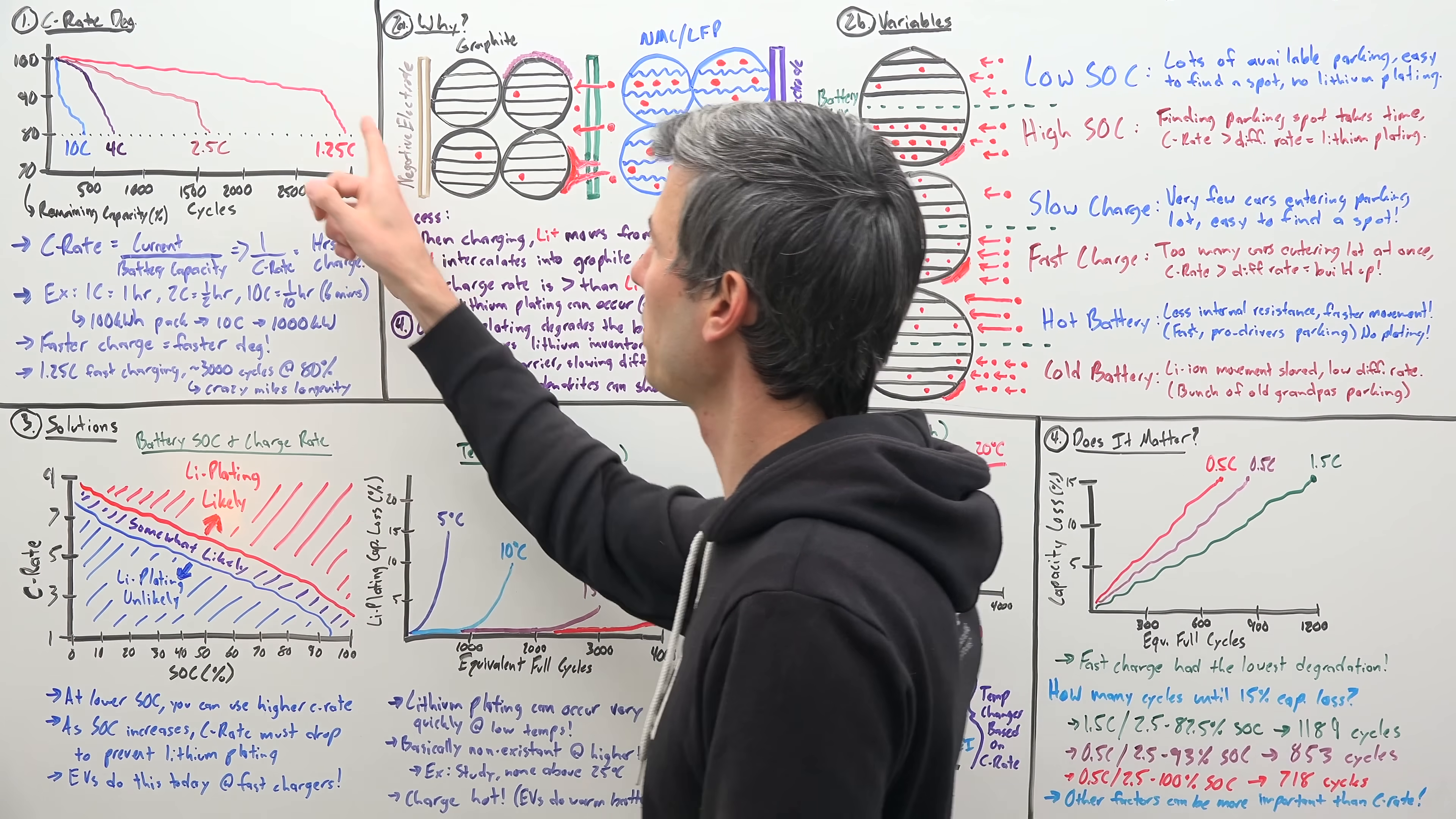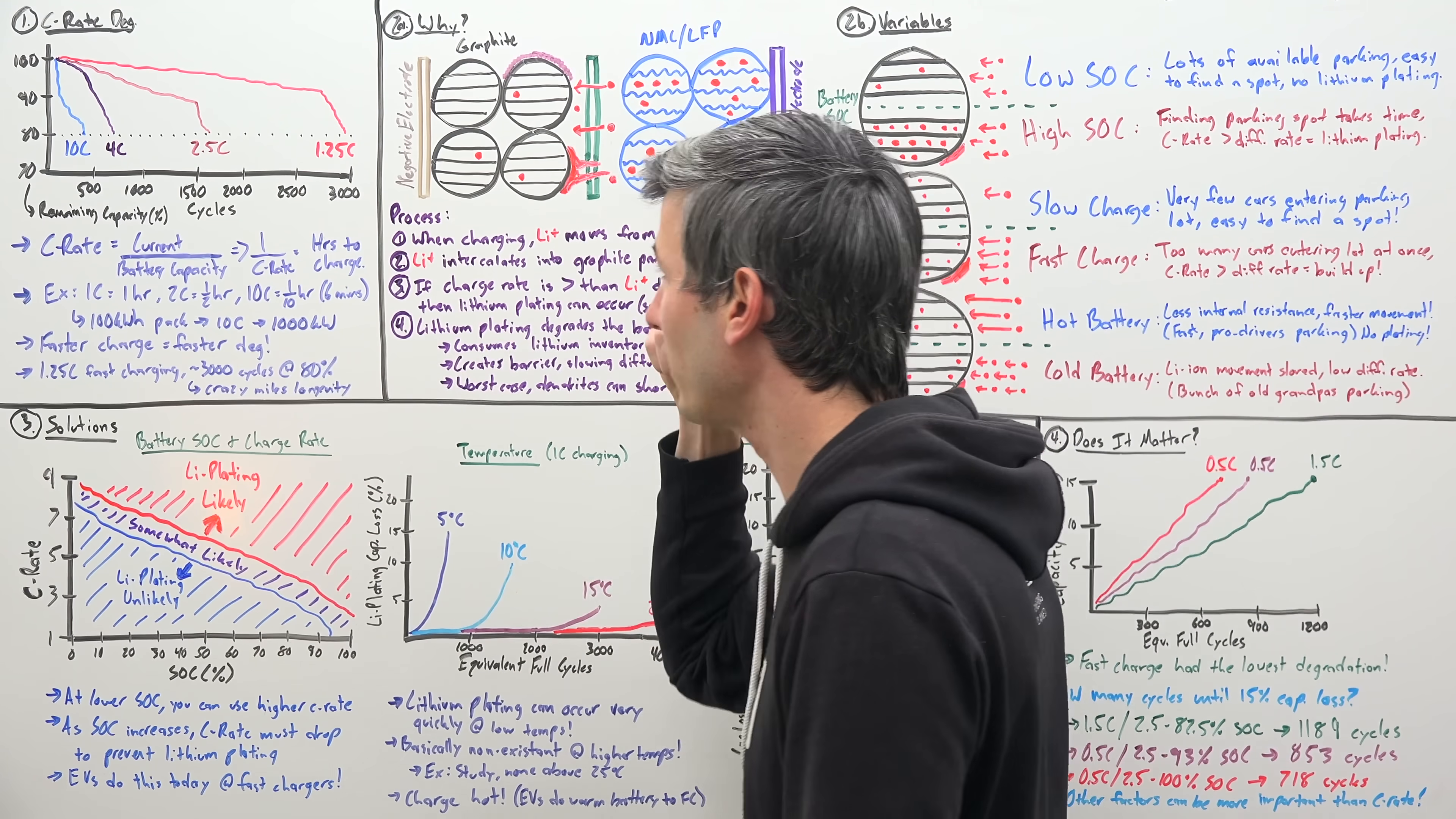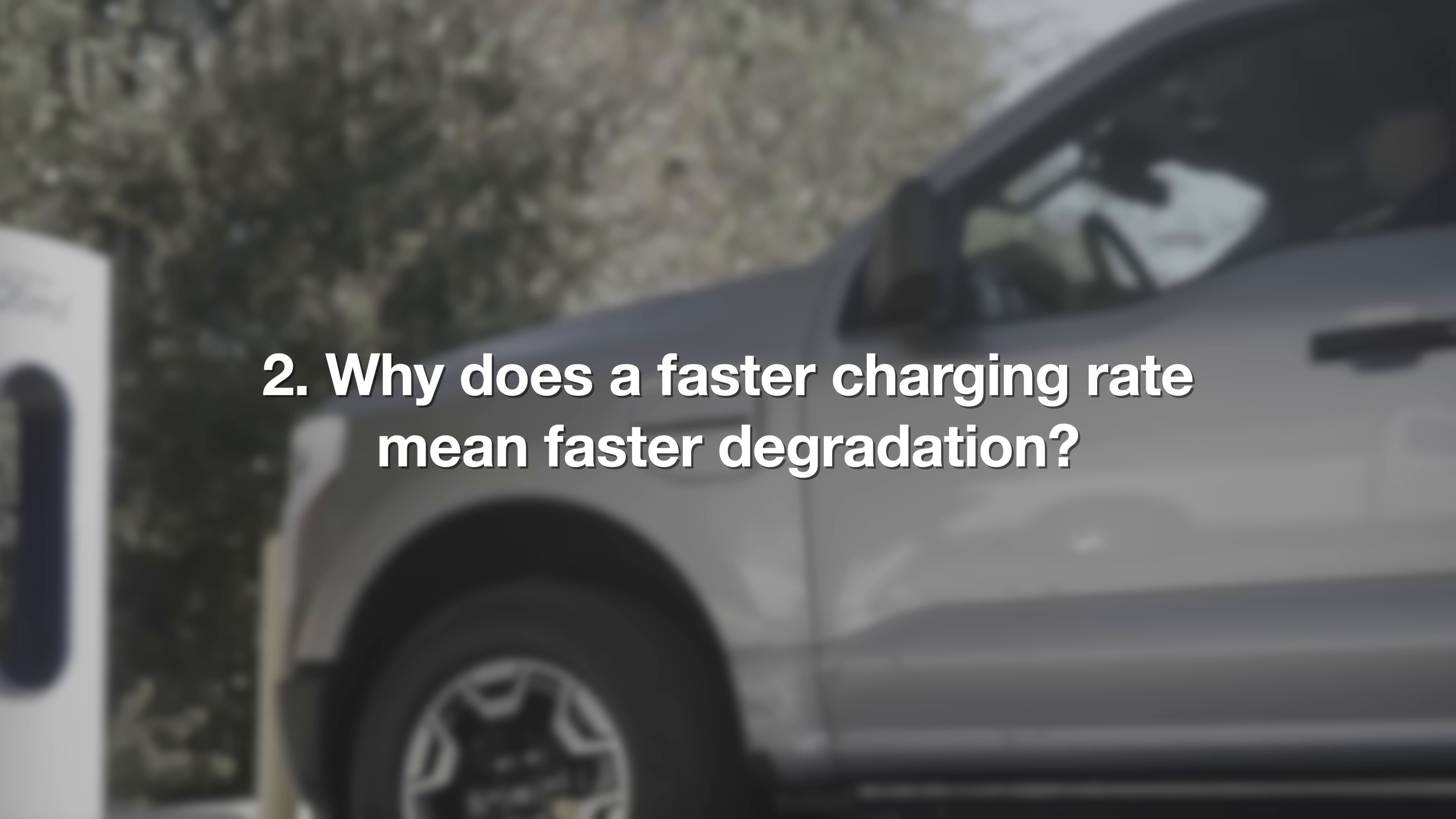So just for context, Tesla's going to be charging somewhere in that one to two and a half C-rate over here on this right side. But what we learn from this is the faster that you charge, the more you have degradation. And it's actually a pretty dramatic change. Between 1C and 10C, that's quite a different cycle life. Now we're getting a little bit ahead of ourselves, but looking at this 1.25C here, it's getting nearly 3,000 cycles. So this could be many, many hundreds of thousands of miles driven before getting down to 80% capacity remaining. In other words, really, really good as far as the longevity of that battery.